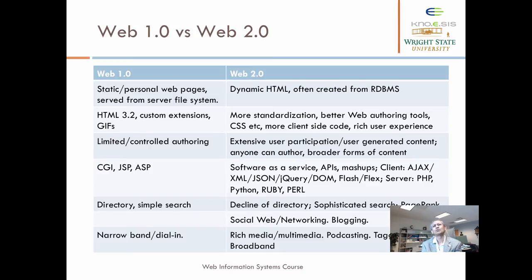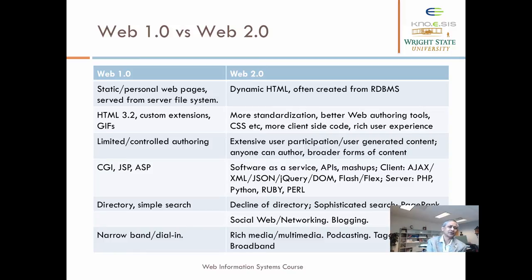When we started writing initial web pages, we had to know HTML and work with database or web server administrators to make our files available. Now we have dynamic HTML and a lot more data rendered from relational databases. In Web 1.0, there were HTML 3.2 and prior standards. Custom extensions were a challenge because some browsers would understand them and others would not — for example, Internet Explorer from Microsoft had its own custom extensions. Fortunately, pretty good standardization has occurred thanks to the World Wide Web Consortium, which manages the standards process.